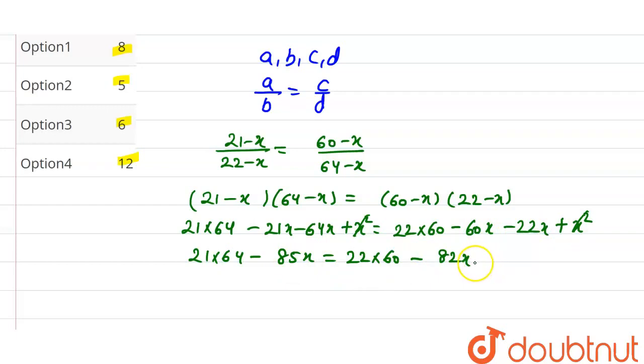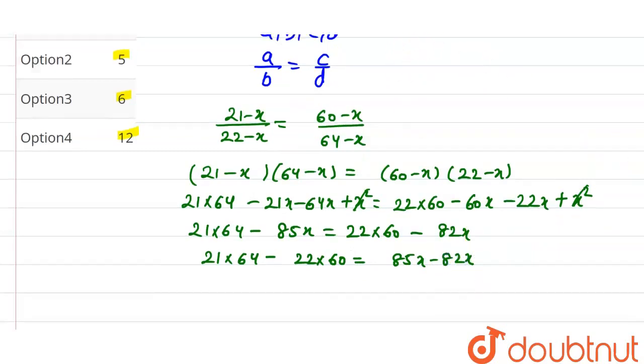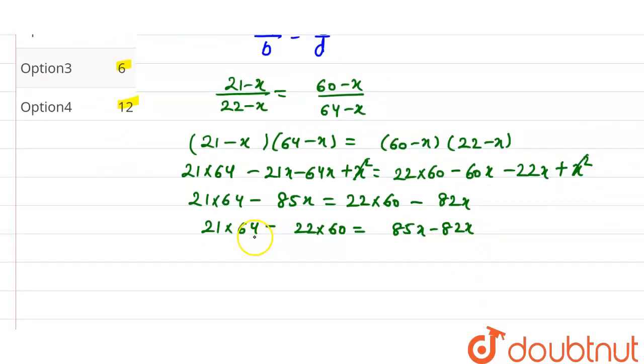21 into 64 minus 22 into 60 equals 85x minus 82x. Now solving, we can take common factors. Taking 4 common from both sides.